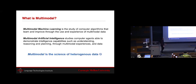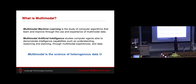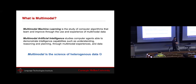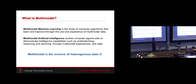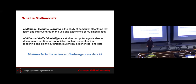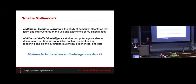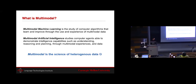To summarize: multimodal machine learning is the study of computer algorithms that learn and improve through the use of multimodal data. Multimodal AI more broadly studies computer agents able to demonstrate intelligent capabilities — such as understanding, reasoning, and planning — through multimodal experiences. Multimodal is the science of heterogeneity in data, studying how different data sources are.